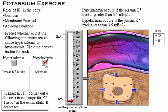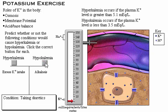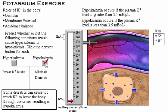Taking diuretics can cause too much potassium to leave the body through the urine, resulting in hypokalemia.